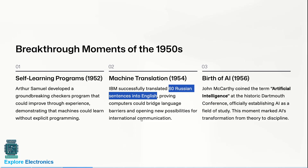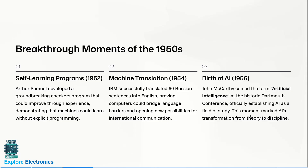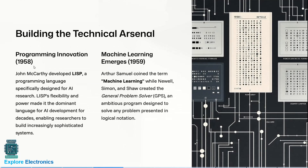In 1956, John McCarthy coined the term 'artificial intelligence' for the first time at the historic Dartmouth Conference, officially establishing AI as a field of study. This moment marked a transformation from theory to discipline. Then in 1958, John McCarthy developed a programming language called LISP,